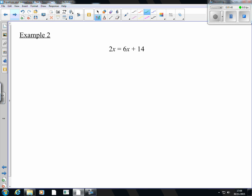Here's example two, very similar. Now your problem here is your x's are separated. So I'm going to cancel out that 6x there so that all my x's are together. So I'm going to subtract 6x from there, subtract 6x from there. 2x minus 6x is negative 4x. That equals 14. Then the next thing I need to do is divide by negative 4.